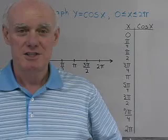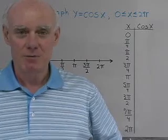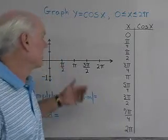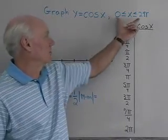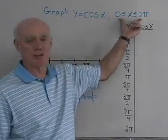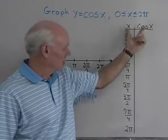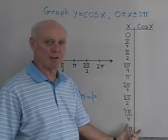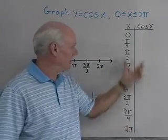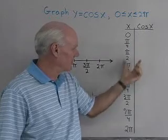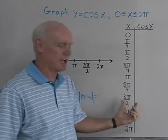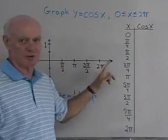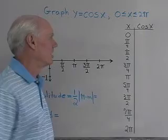We want to graph one complete cycle of y equals cosine x, and we want that complete cycle to be between zero and two pi. I'm going to start by making a little table of values, and then I'll take the values from the table — the ordered pairs — and plot them on this coordinate system.